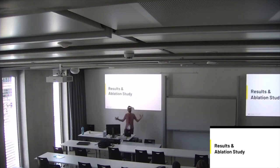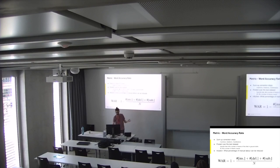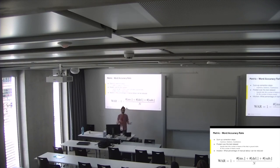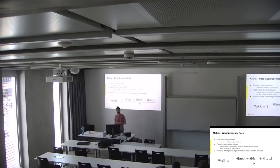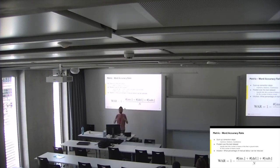We combine all these components and compare them to other representations. For the metric we use the Word Accuracy Rate, which is similar to the Word Error Rate — the positive version of it. We sum up all correction steps — insertions, deletions, and substitutions — needed to get to the ground truth and divide by the relevant tokens in the pooled test dataset. The intuition is roughly what percentage of manual labor we can save.